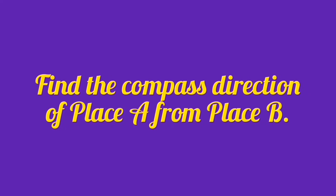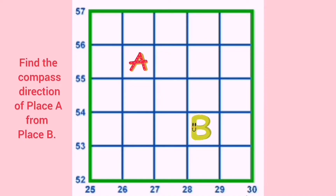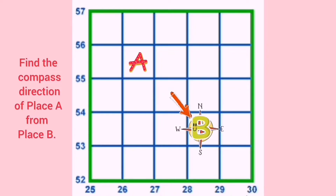Now this is how the question will be asked: find the compass direction of place A from place B. There are two ways of doing this — first I will teach you the actual method, which is a little lengthy, and then the shortcut method. For the long method: whenever someone asks where are you from, you say India or Kerala etc. In the same way, the question asks from place B, so you are from place B. Imagine you are in place B with a magnetic compass. Step 1: draw the four cardinal directions at place B. Step 2: join place A and place B. The direction is between north and west, so the direction is northwest.